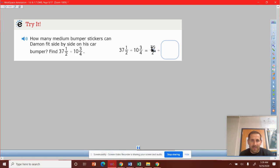37 and one-half has been converted into 75 over 2. What would 10 and three-fourths be converted into? So 10 times 4 is 40. 40 plus 3 is 43 over 4.